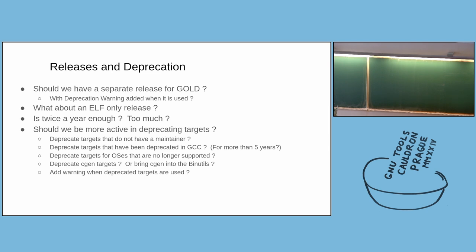Does anyone have comments on how often releases happen? I chose two a year because that fits in with the Fedora release schedule. Does anyone need more releases or fewer? Should we deprecate targets that don't have a maintainer listed? Should we deprecate targets that have been deprecated in GCC? Targets deprecated in GCC may still have a compiler elsewhere and may still want GAS as the assembler, so they should probably be treated independently.